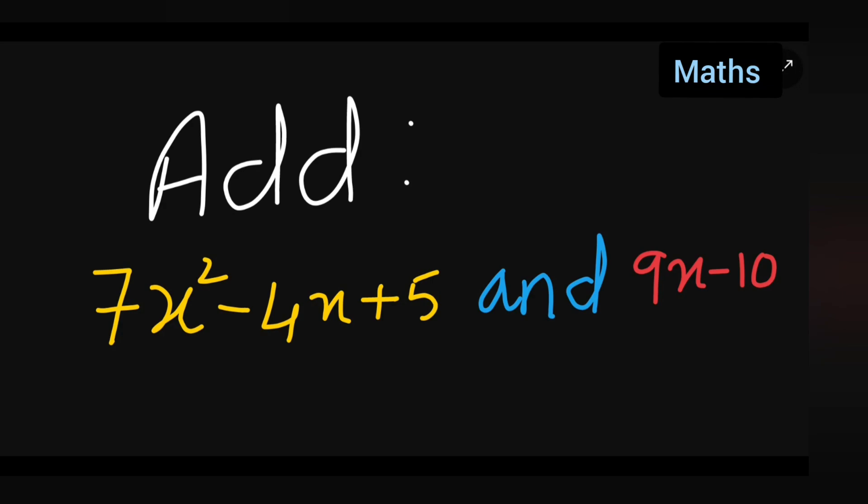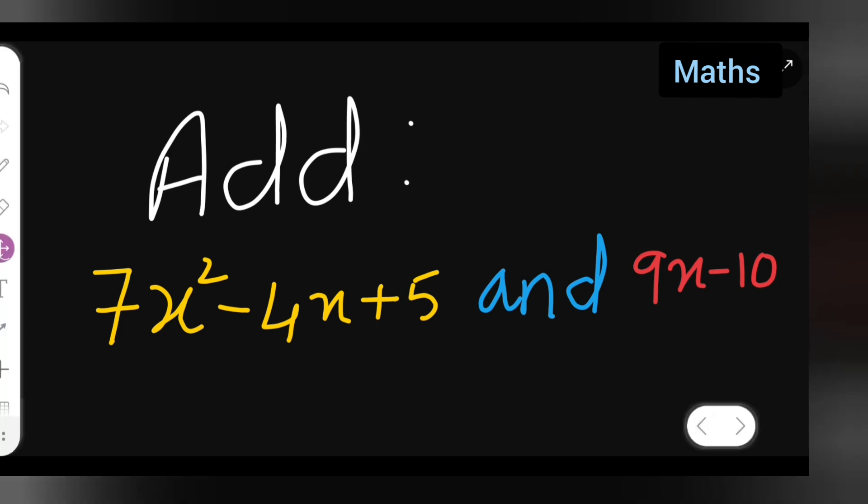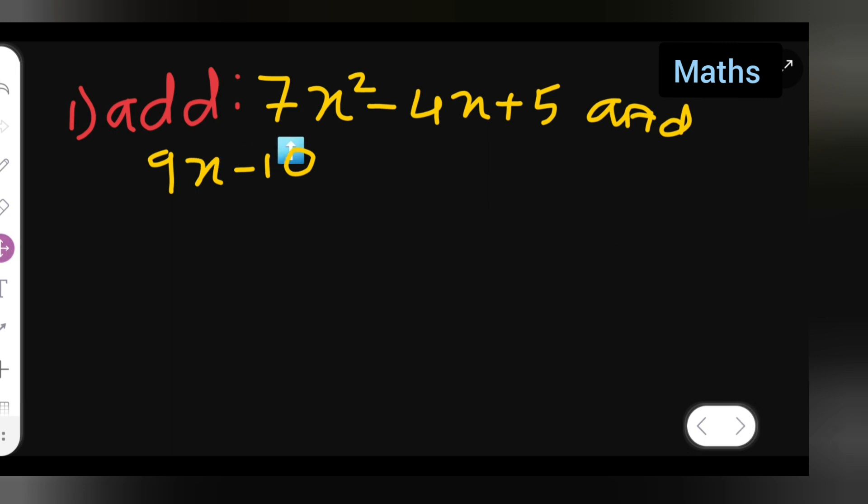Welcome to today's class of mathematics. Today's question is: add 7x² - 4x + 5 and 9x - 10. First, I can write down the question: add 7x² - 4x + 5 and 9x - 10.